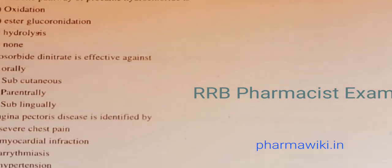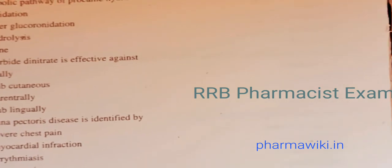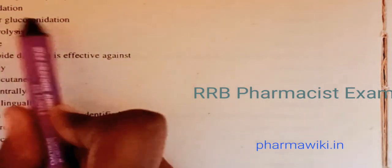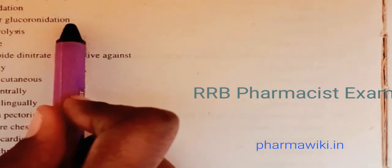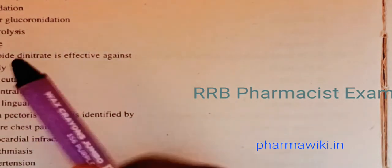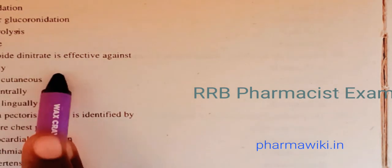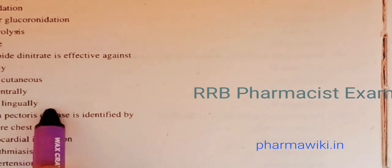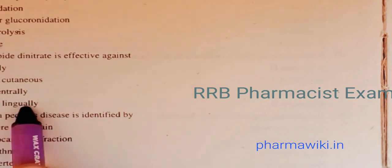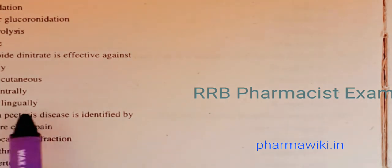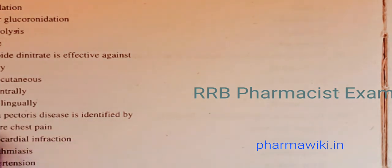Question 61: Which of the following drugs is a carbonic anhydrase inhibitor? The answer is acetazolamide. Question 62: The metabolic pathway of procaine hydrochloride is ester hydrolysis. Question 63: Isosorbide dinitrate is effective — orally, subcutaneously, parenterally, or sublingually? The answer is sublingually.